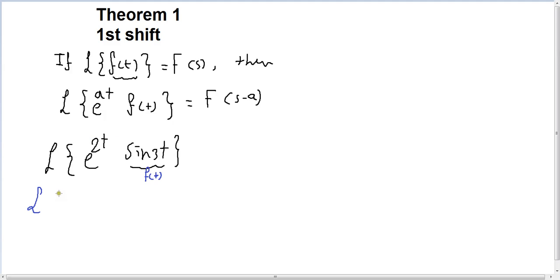So the Laplace of sin omega T. The Laplace of sin omega T is equal to omega over S squared plus omega squared. So the omega here is just 3, so 3 over S squared plus 3 squared.